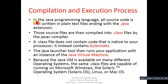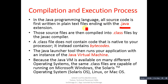In Java programming language, all source code is first written in plain text files ending with the dot Java extension. The code which we write in a particular programming language is known as source code, and Java files have the dot Java extension.